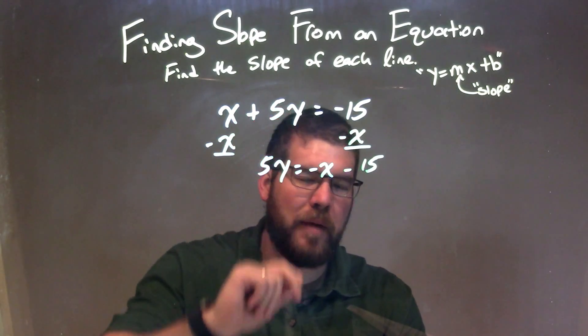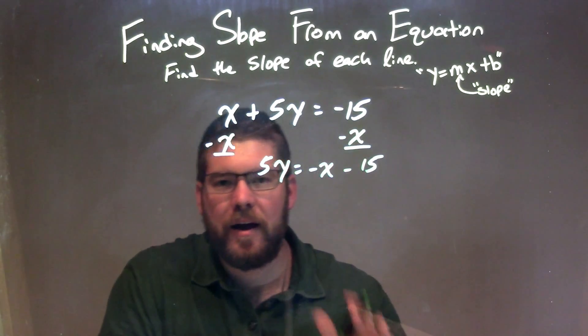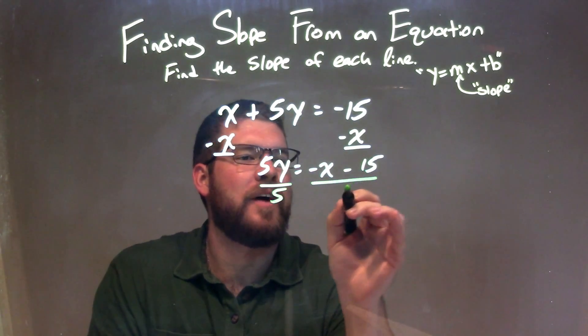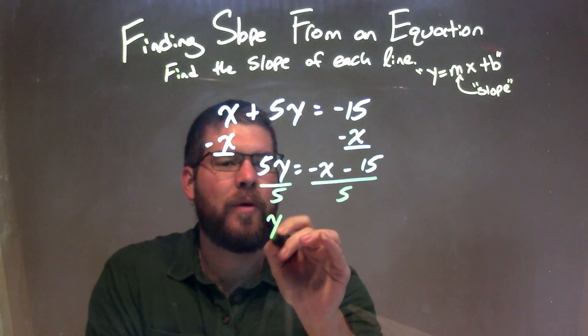Okay, they're not like terms. We're not combining them. Now to keep on the train here of getting y by itself, I'm going to divide both sides by 5. That leaves me with y equals...